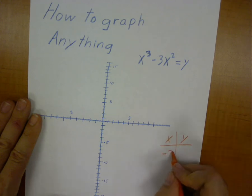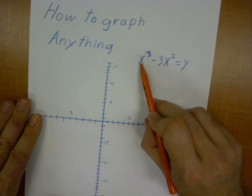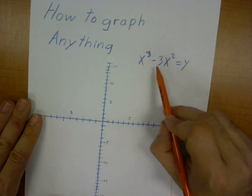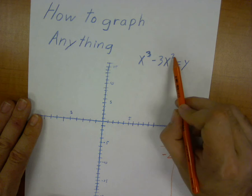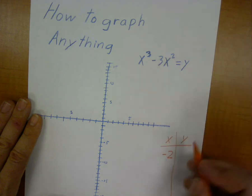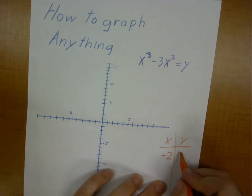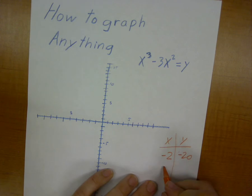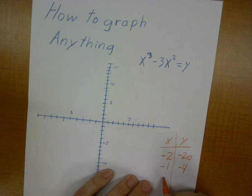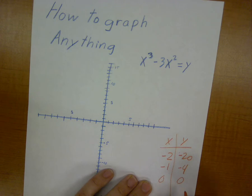If we plug negative 2 into here, negative 2 to the power of 3 gives us negative 8. Negative 2 to the power of 2 gives us 4 times negative 3 gives us negative 20. Likewise, I can plug negative 1 in here and get negative 4. If I plug 0 into here, I get 0. Now, likewise, we can continue on with this, getting other values.